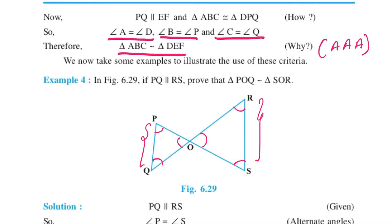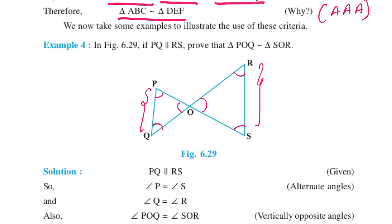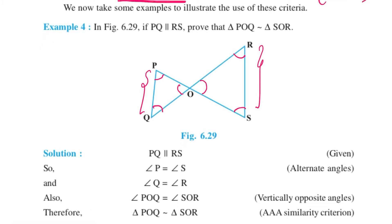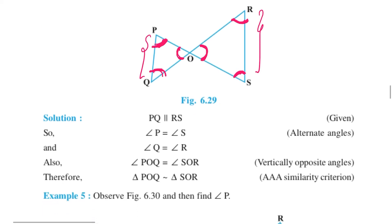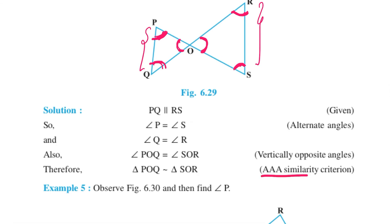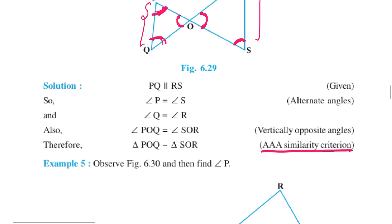Now let us take some examples to illustrate the use of these criteria. In figure 6.29, if PQ is parallel to RS, prove that triangle POQ is similar to triangle SOR. Since PQ is parallel to RS, angle P equals angle S (alternate angles), angle Q equals angle R (alternate angles), and angle POQ equals angle ROS (vertically opposite angles). So by AAA similarity criteria, triangle POQ is similar to triangle SOR.